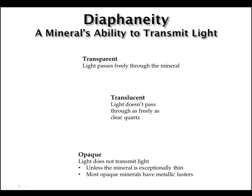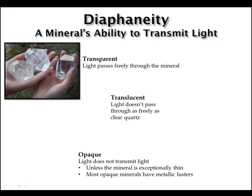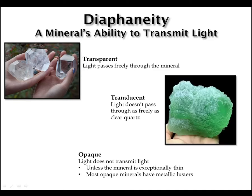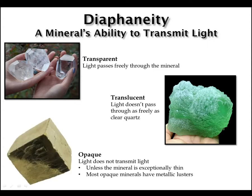Diaphaneity refers to the mineral's ability to transmit light. Minerals are commonly described as being either transparent, where light passes freely through the mineral; translucent, where light doesn't pass freely through the mineral; or opaque, where light cannot pass through the mineral at all.